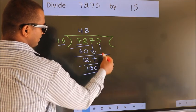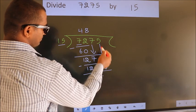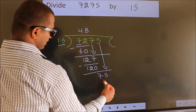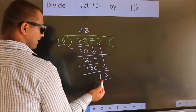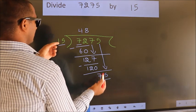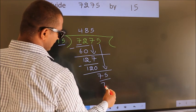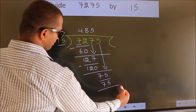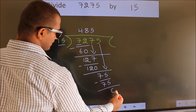After this, bring down the beside number. So 5 down. So 75. When do we get 75? In the 15 table: 15 fives, 75. Now we subtract. We get 0.